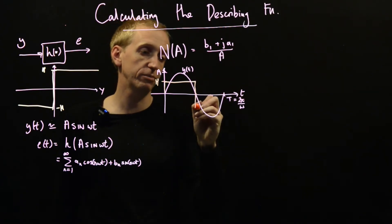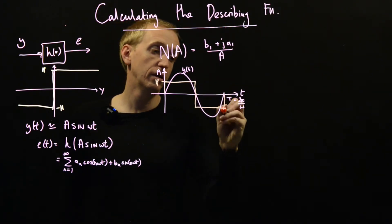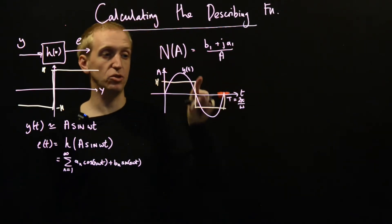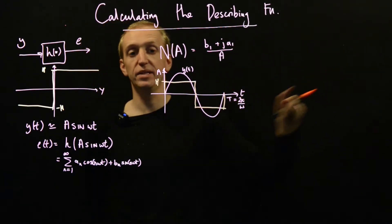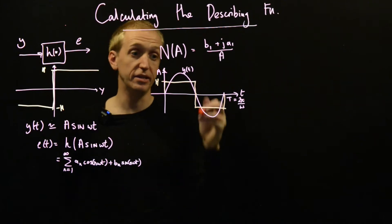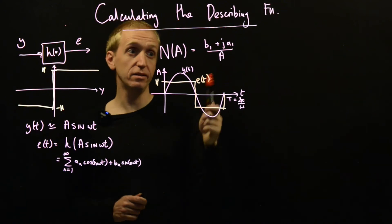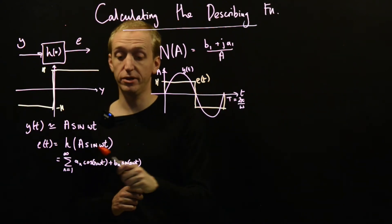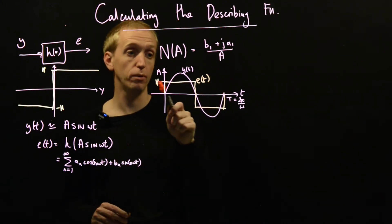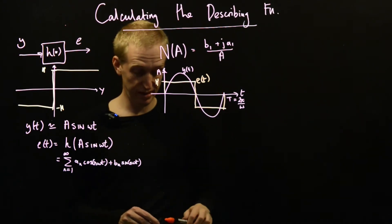And this pattern repeats. So this square wave function, this is going to be, this is e(t). And now all that remains is to find the first Fourier coefficients for this particular function, e(t).